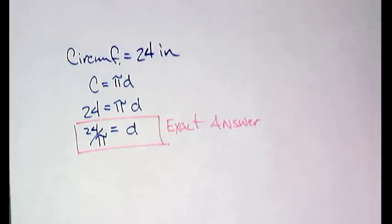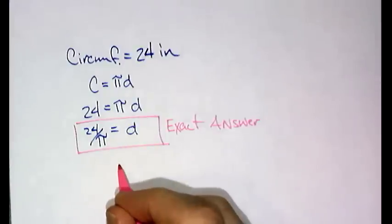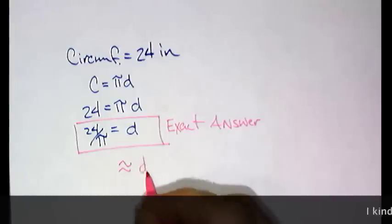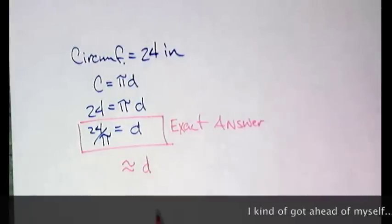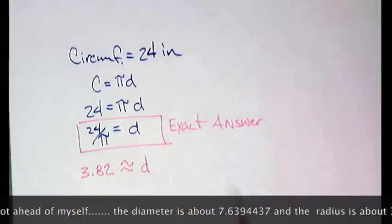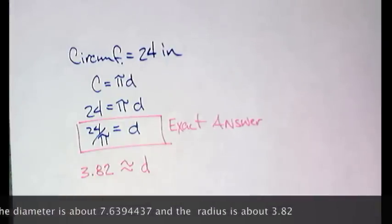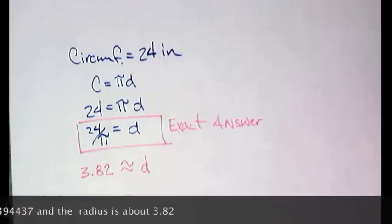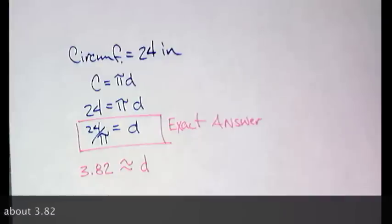Now, if I round it, I'm going to change my symbol. And in this case, it would be somewhere, let's go to the hundredth place, about 3.82. So if I ask for an exact answer, that means in terms of pi. Let's move on.